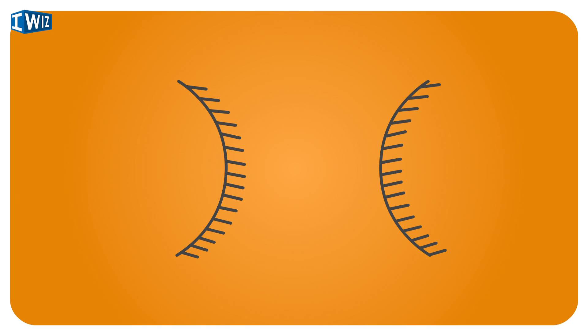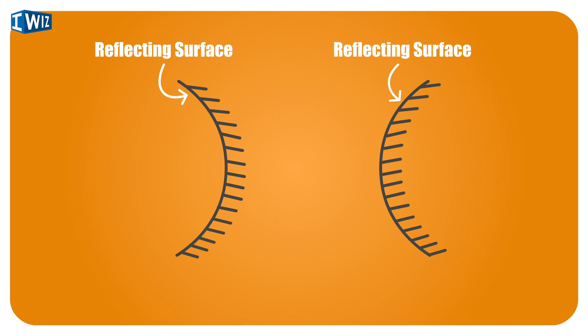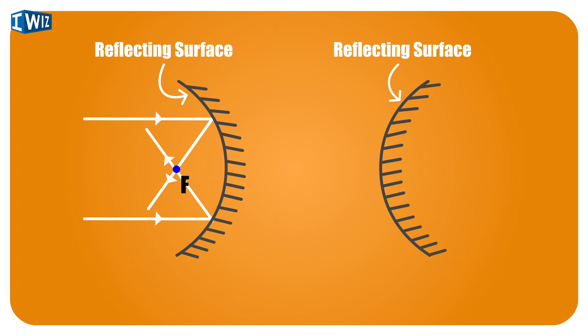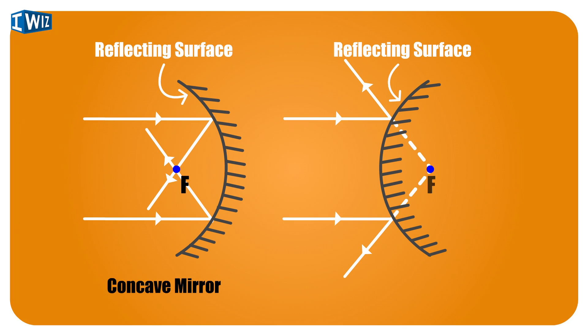So I have a curved surface — it may be curved this way or that way. When I put these prickly lines on one side, the other side becomes a reflecting surface. When I put a ray of light on this side, it reflects back. A mirror that reflects light on its own side and focuses it is known as a concave mirror, and one that diverges the light is known as a convex mirror.